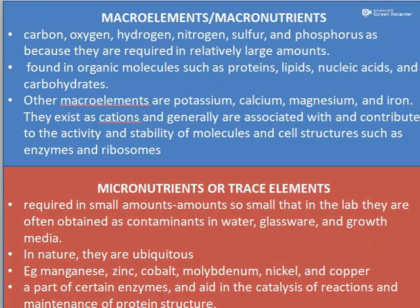In addition to carbon, hydrogen, and oxygen, we also have potassium, calcium, magnesium, and iron, which are considered to be macro elements in the case of bacteria. These ions mainly occur as cations and they mainly contribute to the activity and stability of molecules and cell structures such as enzymes and ribosomes.